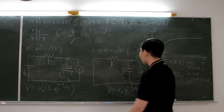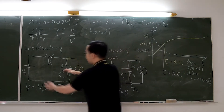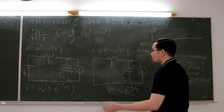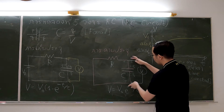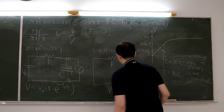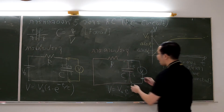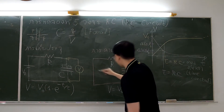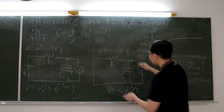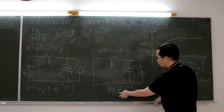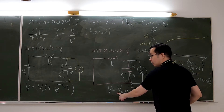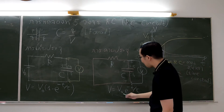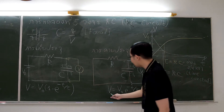Part 2 is to study a discharging circuit. When the capacitor has been fully charged, we remove the battery, leaving only the capacitor and the resistor in the circuit. When we are discharging, the charges move from the capacitor. Before discharging, we measure the maximum potential difference V₀ across the capacitor. As time passes, charges on the capacitor decrease according to the discharging equation.